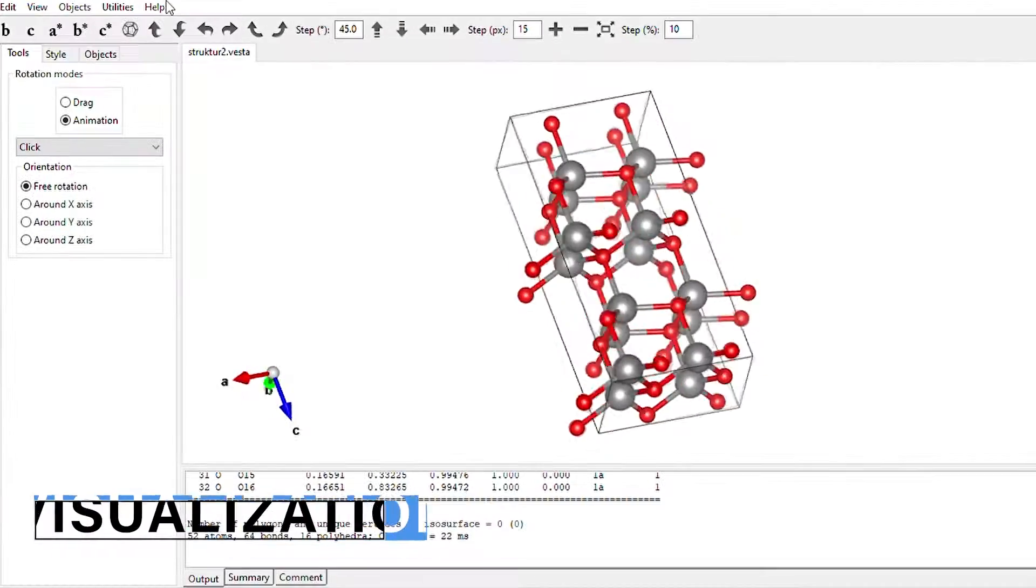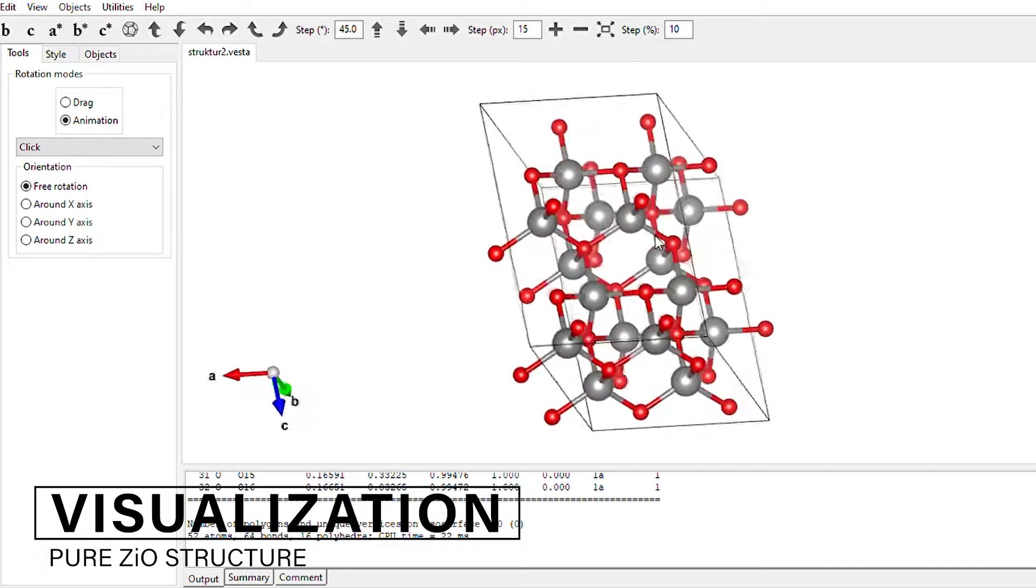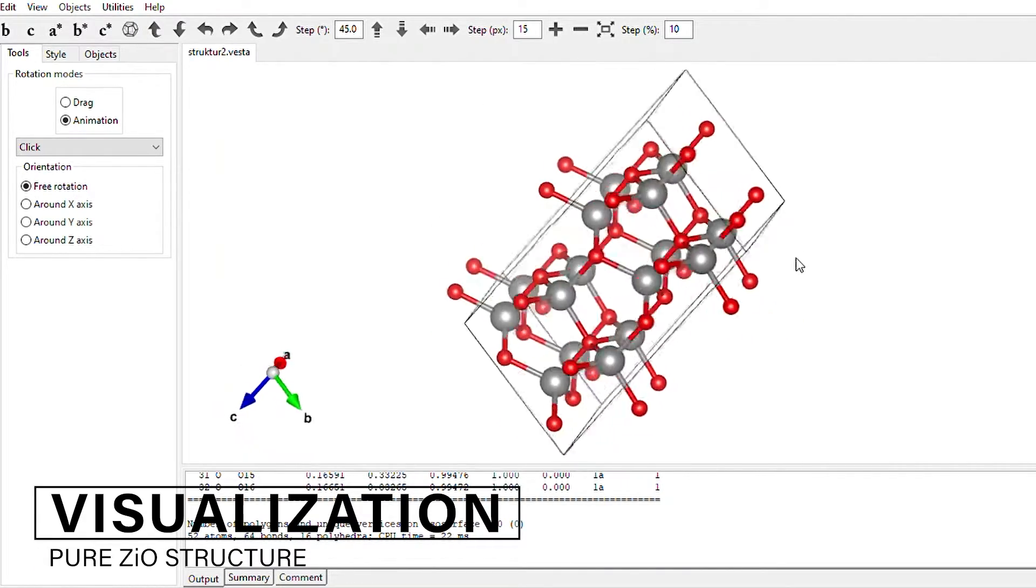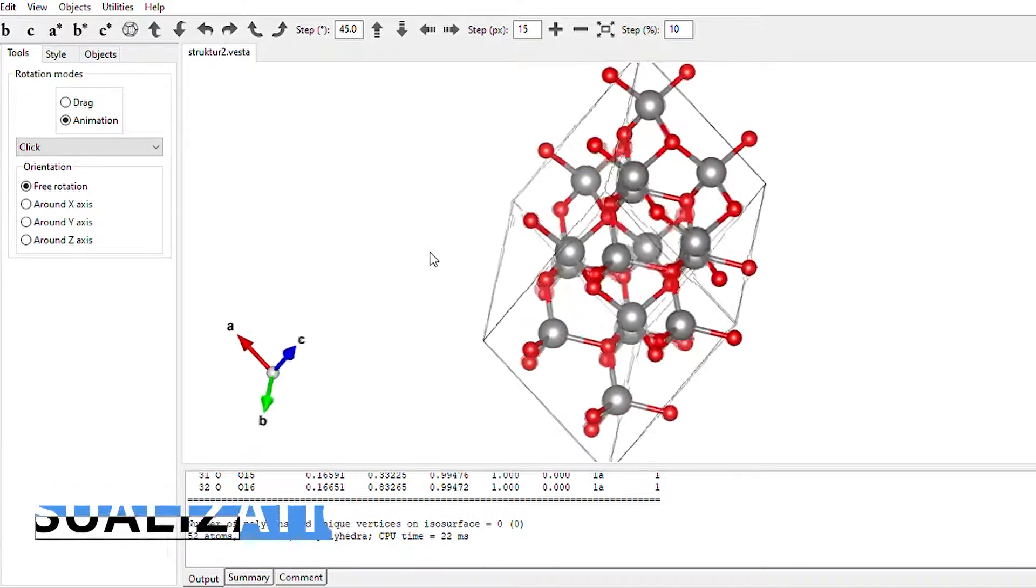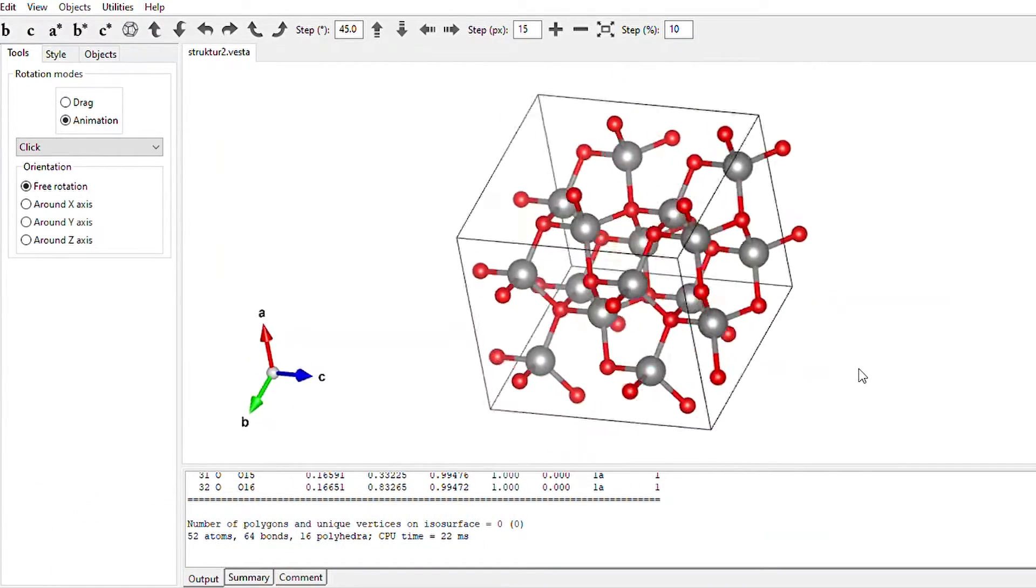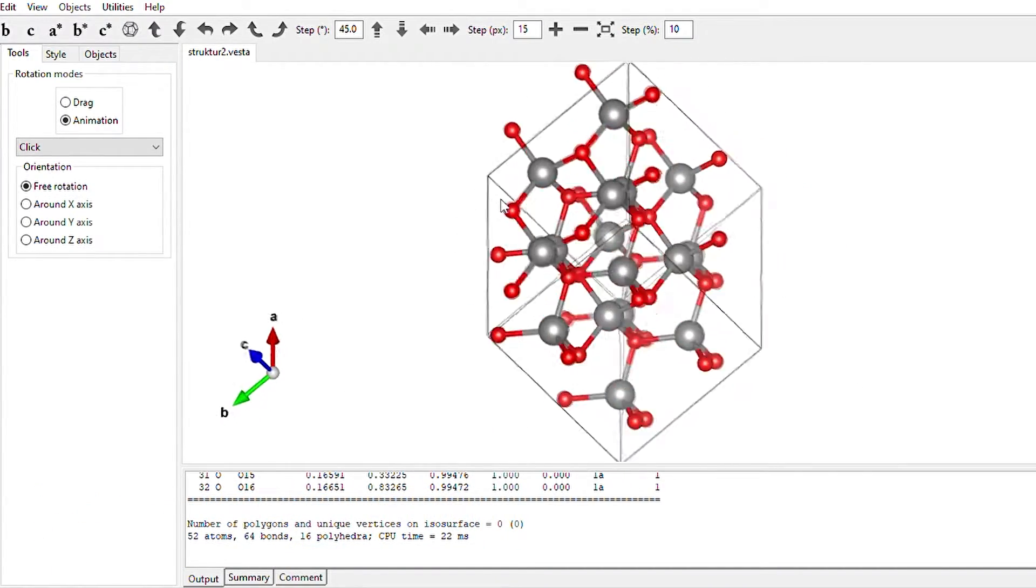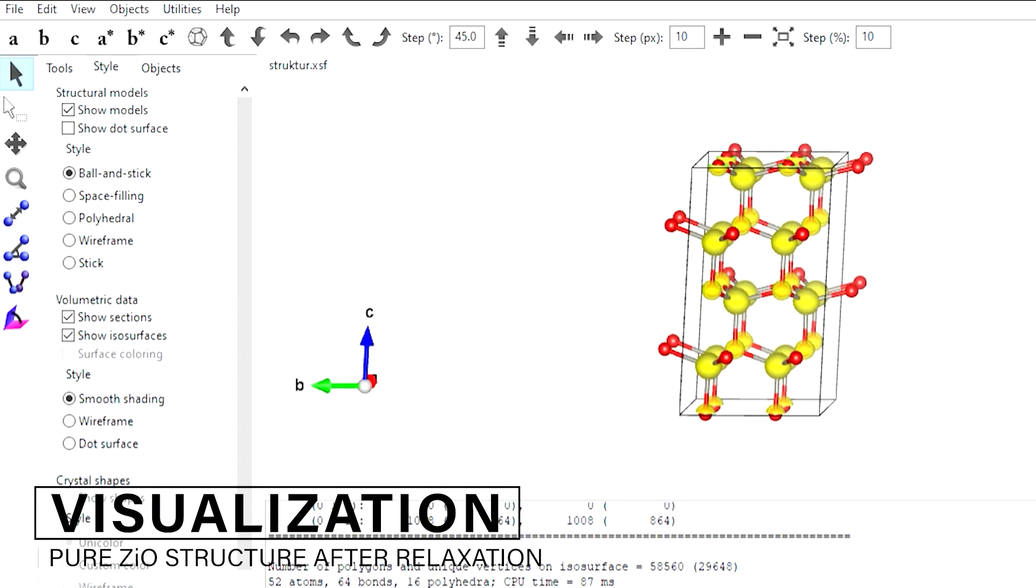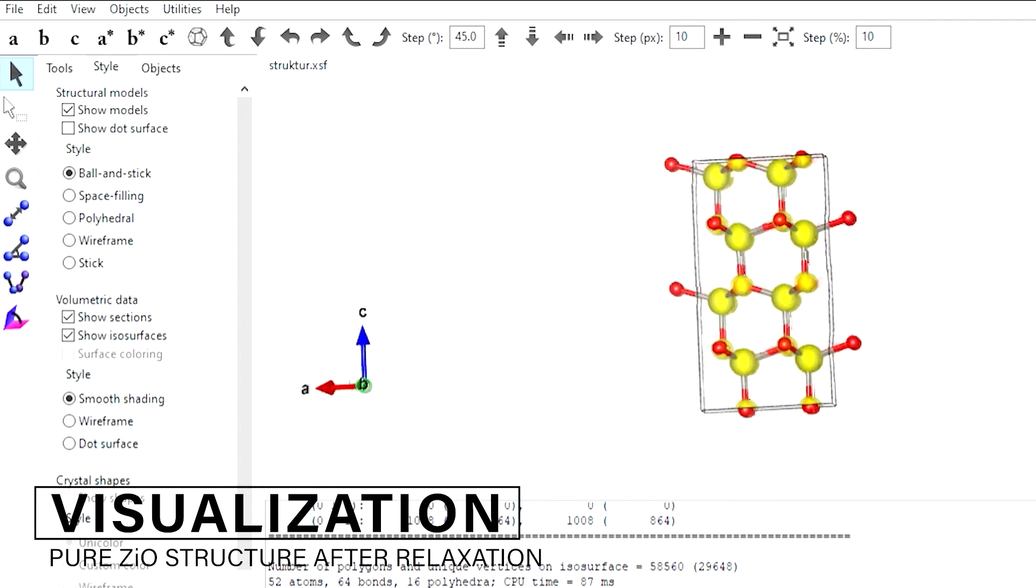In general, DFT or Density Functional Theory Calculations and Visualization is a successful theory to calculate the electronic structure of atoms, molecules, and solids. Its goal is the quantitative understanding of material properties from the fundamental laws of quantum mechanics.